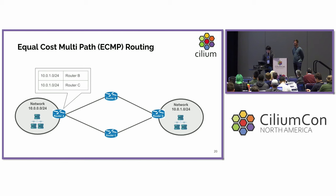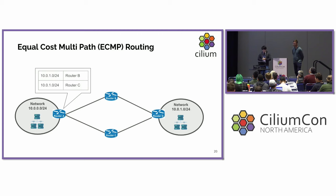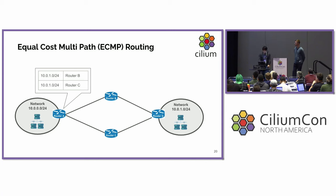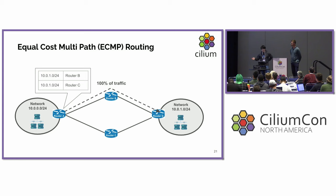Now let's make things more complicated. What happens if there are multiple paths to the same prefix? In this case, a host on the left network can reach the right network in two ways: router A → B → D, or router A → C → D. BGP usually chooses the shortest path, but if both paths have exactly the same distance, BGP can handle this situation in two ways. The first is breaking the tie in some way and choosing only one route as the best path, meaning 100% of traffic forwards to, for example, router B.